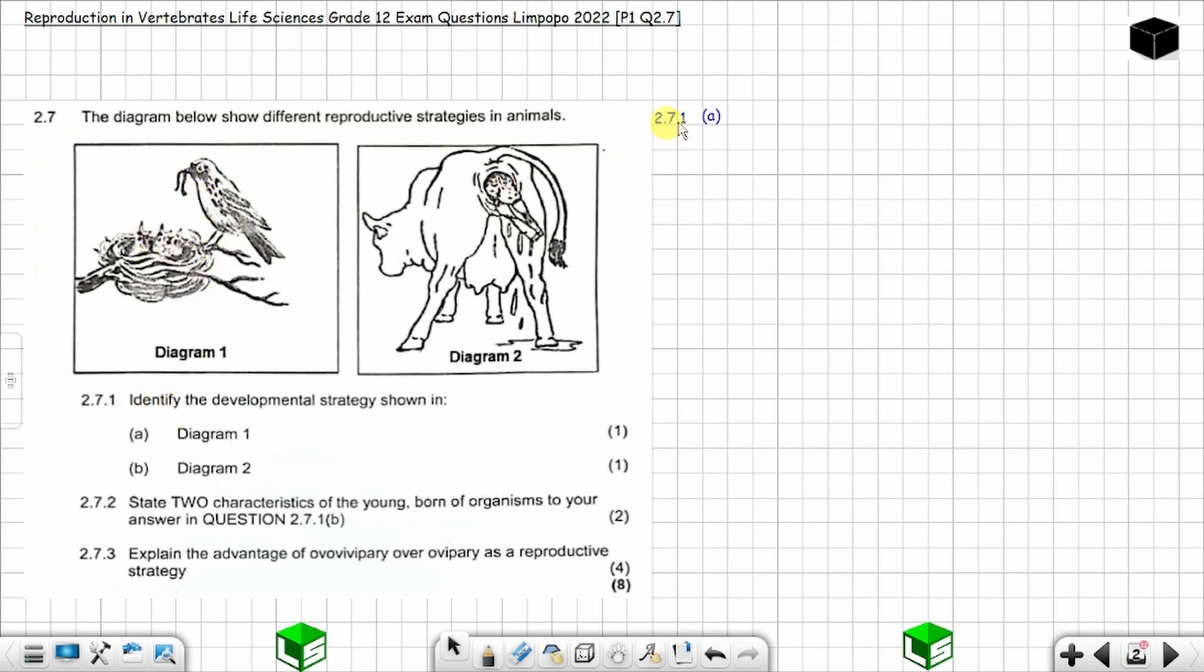Now question (b): identify the developmental strategy shown in Diagram 2. This is Diagram 2, you have the cow giving birth to a baby cow. You know when baby cows are born they can move soon after birth, they can feed themselves, they are born with their eyes opened and their bodies are covered with fur, so they are not depending on the parent. So this is precocial development.